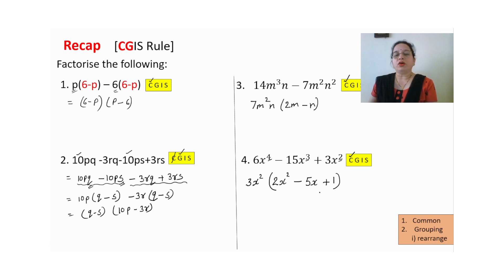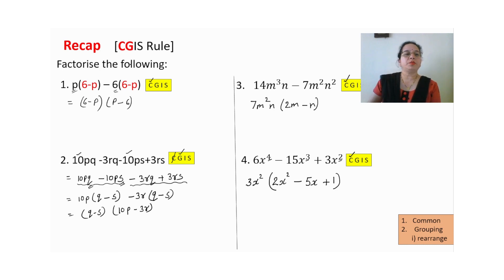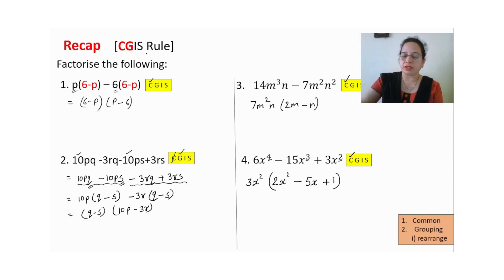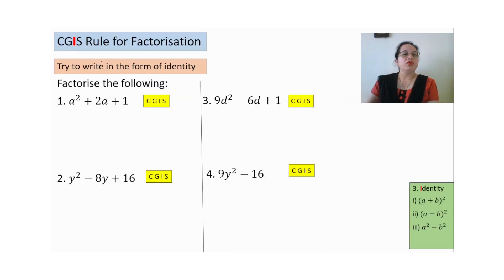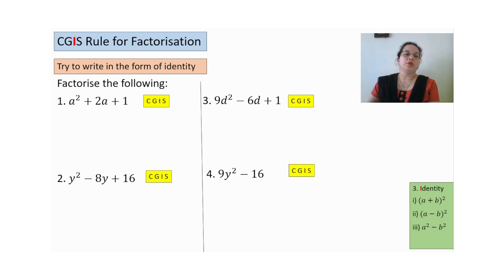Further we can solve these or not — I will explain with the I rule and S rule. Till here I have explained about C and G: taking common and making groups. Sometimes further solving is possible, sometimes not. Now we are going to start with I. What is I? I means identity. Three standard identities: (a+b)², (a-b)², and a²-b². If common is not possible and grouping is not possible, we try to convert into one of these three identities.